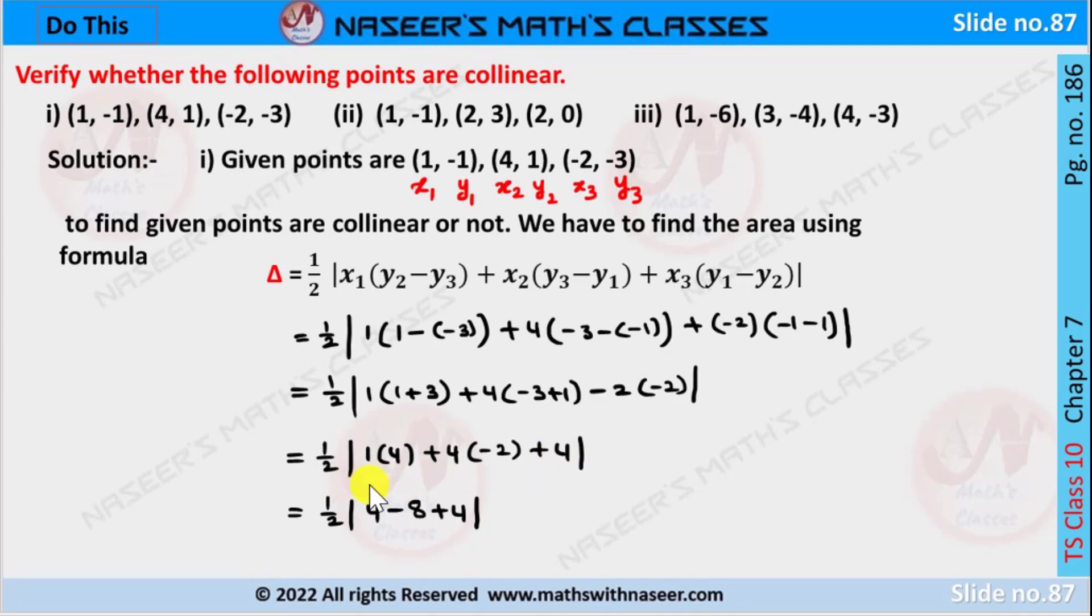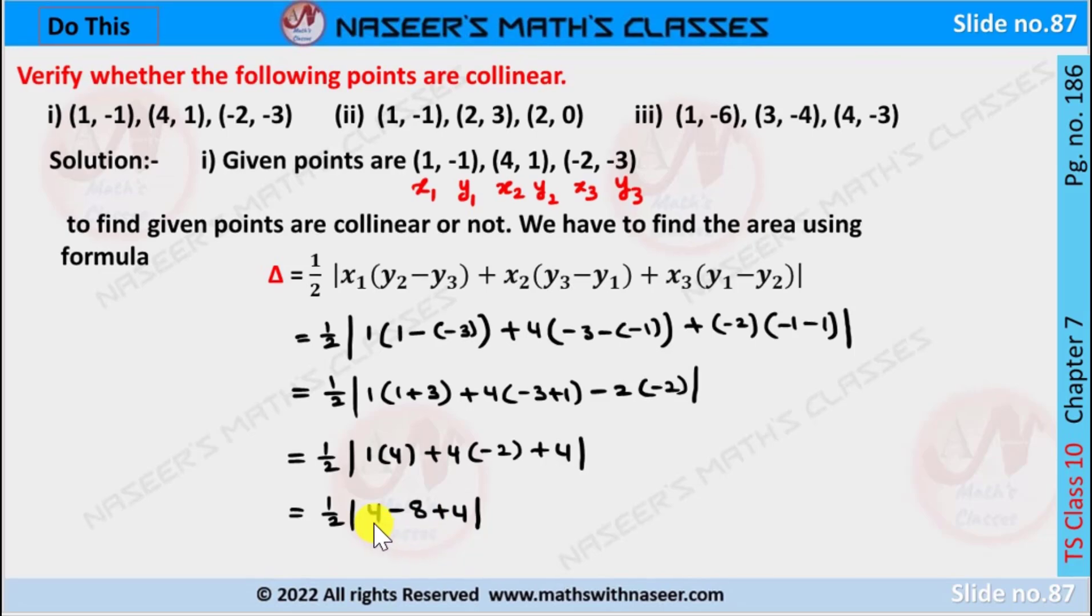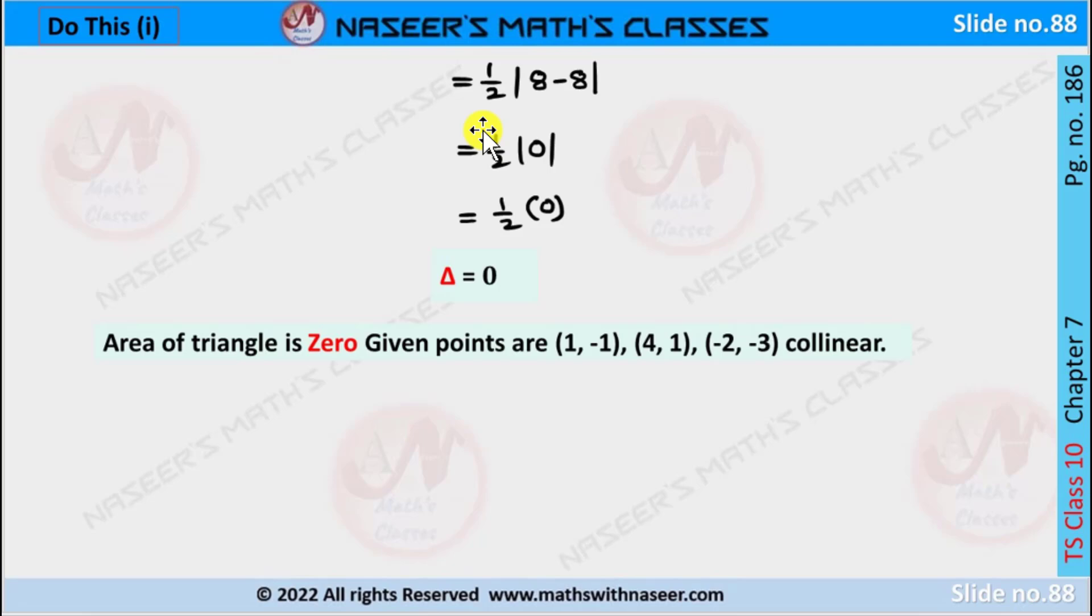Again simplifying these, we can write it as: 1 times 4 is 4, 4 times -2 is -8, and +4. Now we simplify these values: +4 + 4 is 8, then we get 8. Then we can write it as ½(8 - 8).